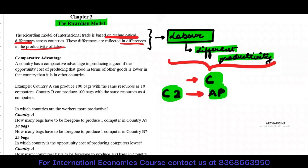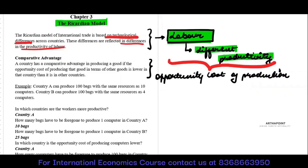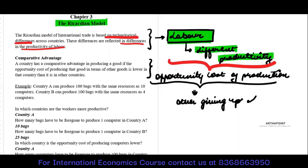Now we introduce one term known as comparative advantage. Comparative advantage basically works on something which is known as the opportunity cost of production. Opportunity cost of production is basically when you produce one product, how much of the other are you giving up? That is known as opportunity cost.